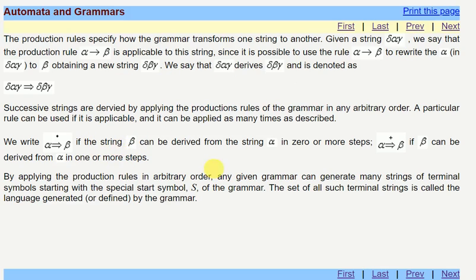By applying these production rules, at the end we will get the terminal symbols. We will start with the special start symbol S, which is non-terminal or variable, and at the end we will get the string of terminal symbols. The set of such terminal strings is called language generated by the grammar. Grammar is defined by the set of production rules. Starting from the non-terminal symbol S, using these production rules, we derive terminals. These terminals are the set of strings. Those terminal strings are called the language generated by the grammar.